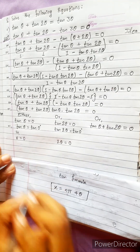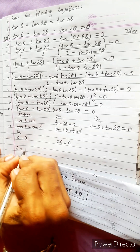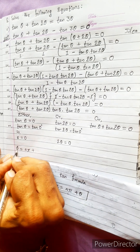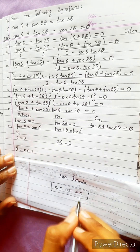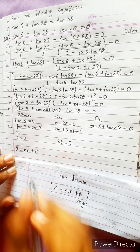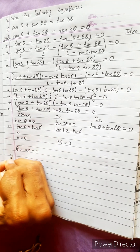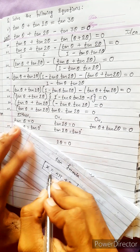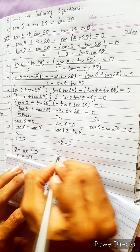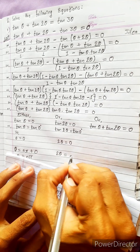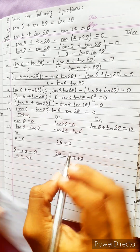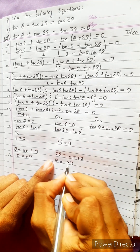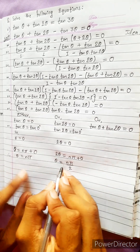Using the general solution formula x = nπ + θ (only plus, not plus-minus like for sin/cos), for the first case: θ = nπ + 0, so θ = nπ. For the second case: 2θ = nπ + 0, so 2θ = nπ, giving θ = nπ/2. These are the first two answers.